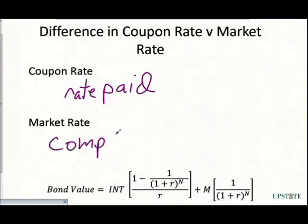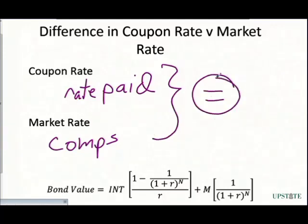The market rate is basically our comps. This is what a comparable bond would be selling for. Now, what we have noticed is that if these two are equal to each other, our present value will be equal to our maturity value.